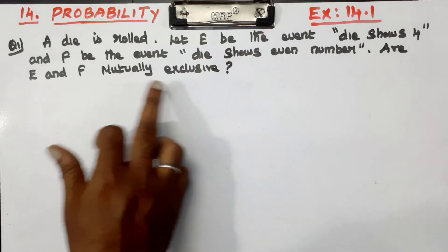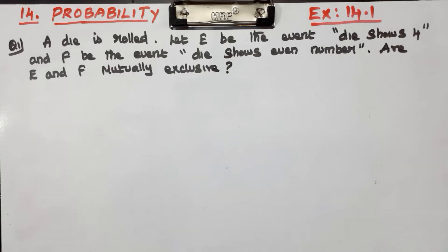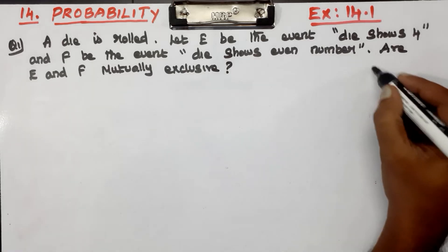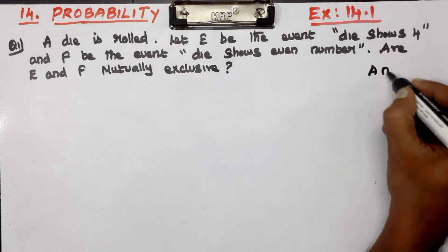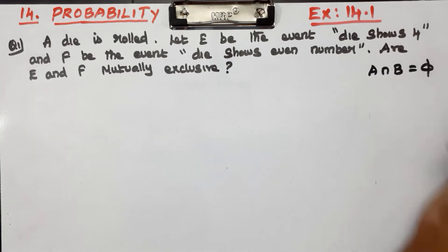E and F are mutually exclusive. Mutually exclusive means A intersection B is equal to the empty set. That is the definition of mutually exclusive events.